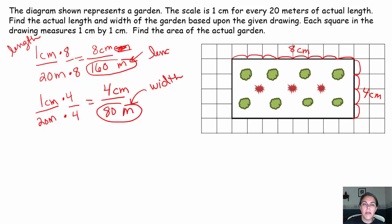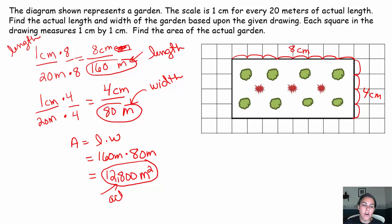The length of my actual garden is 160 meters. So let's find the area of our actual garden. Area is length times width. Let's take our actual length, 160 meters times our actual width, which is 80 meters. 160 times 80 is 12,800 meters squared. This is the actual area of our garden.